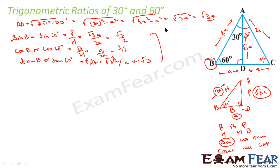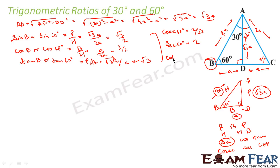Similarly, cosec 60° = 1/sin 60° = 2/√3. Sec 60° = 1/cos 60° = 1/(1/2) = 2. Cot 60° = 1/tan 60° = 1/√3. So I have all the values of 60 degrees.